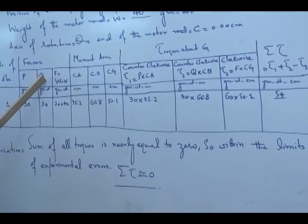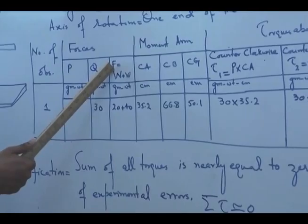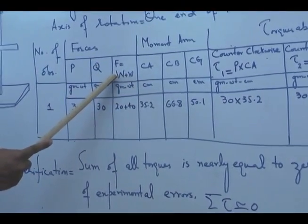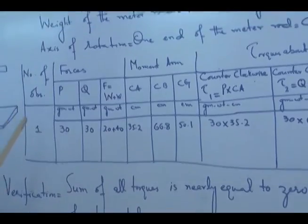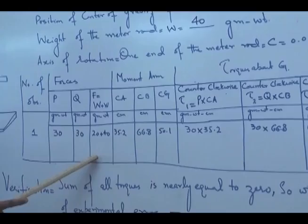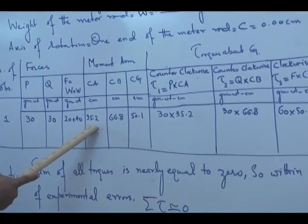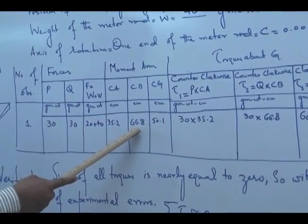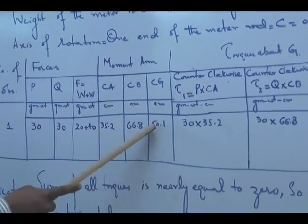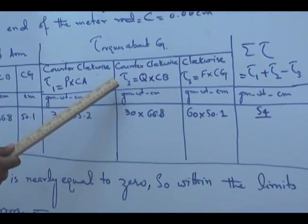Our second force Q was 30 gram weight acting on spring balance S2. This force F is very important because F equals capital W plus small w — capital W is the external weight and small w is the weight of the meter rod — so 20 plus 40 equals 60. We are just increasing this external weight at the center. The moment arm of force P is 30.2 cm, the moment arm of force Q from the axis of rotation is 66.8 cm, and the moment arm at the center of gravity is 50.1 cm.